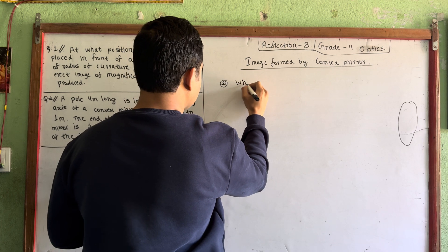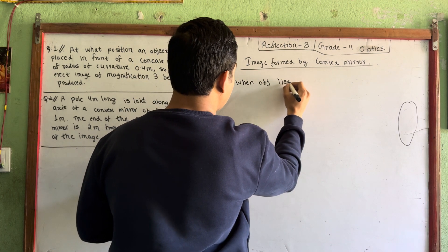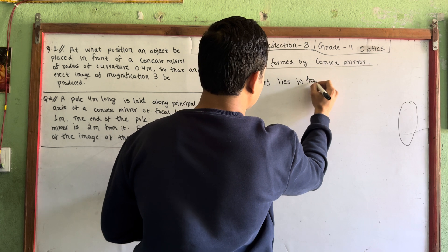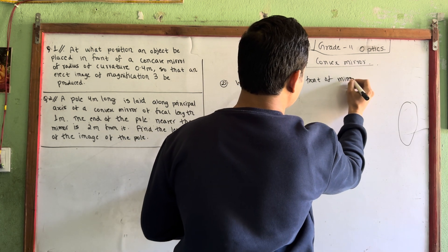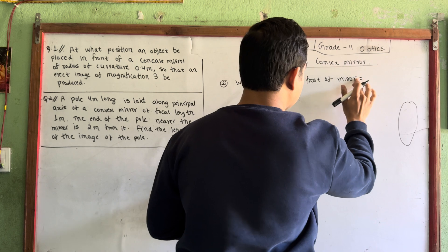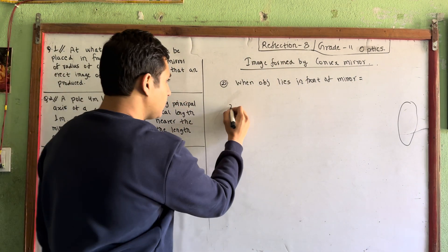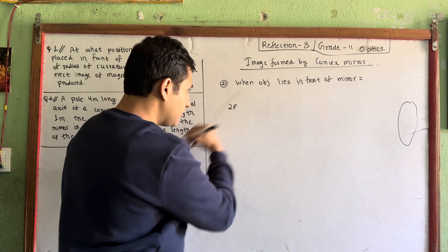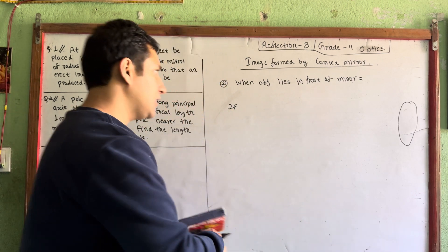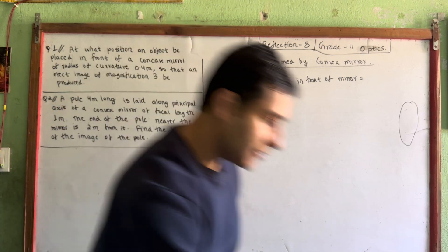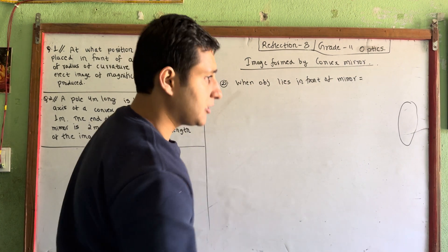When the object lies in front of the mirror — number 2 — when the object is placed directly in front of the mirror, between the two-f point and the plus two-f point in front of the mirror.